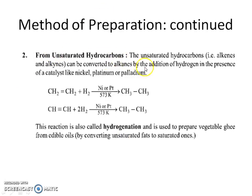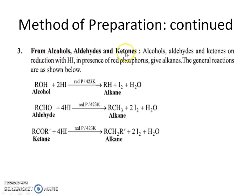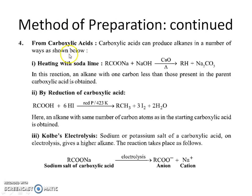From unsaturated hydrocarbons — alkynes and alkenes — alkanes are produced by hydrogenation in the presence of catalysts like nickel, platinum, and palladium. Alkanes are also produced from alcohols, aldehydes, and ketones in the presence of red phosphorus. From carboxylic acids, alkanes are produced by decarboxylation — heating the sodium salt of a carboxylic acid. Electrolysis of carboxylate salts also produces alkanes.